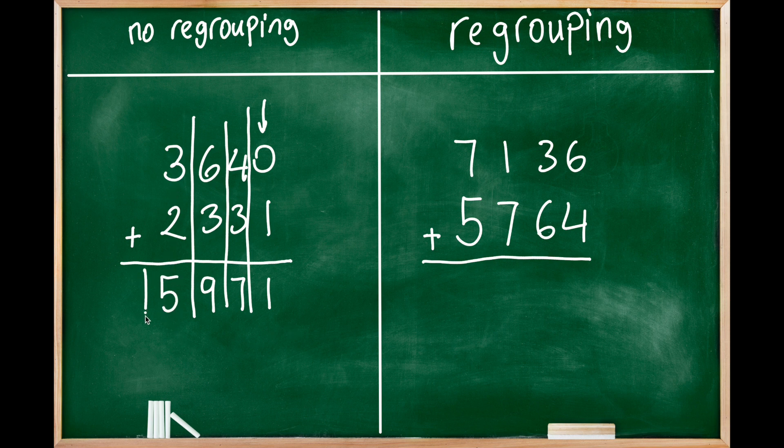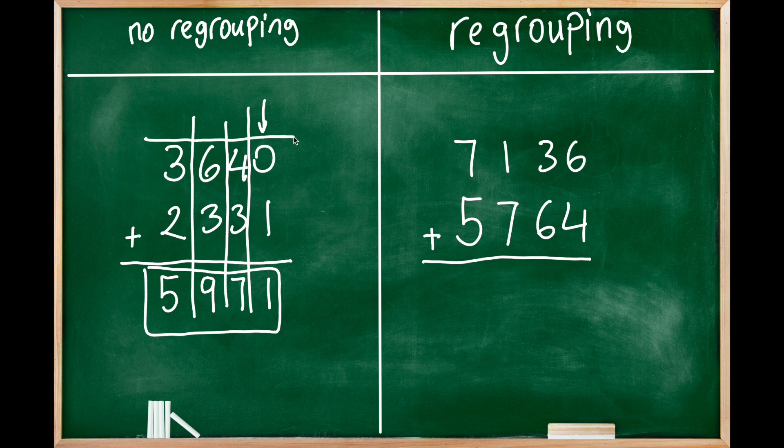As you see we didn't use any carryover place to carry over from one place to other place because the sums generate one digit value. Let's check this problem here. We will see some carryovers.